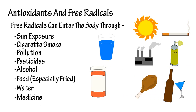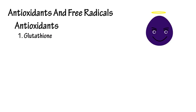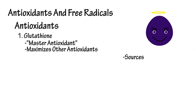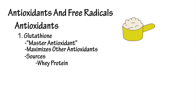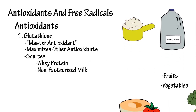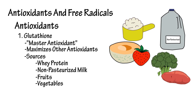Now let's look at antioxidants. We're going to start with glutathione. It has been called the master antioxidant. It's comprised of three amino acids and has the ability to maximize the activity of all the other antioxidants. Glutathione is found in high-quality whey protein, non-pasteurized milk, and raw uncooked fruits and vegetables.